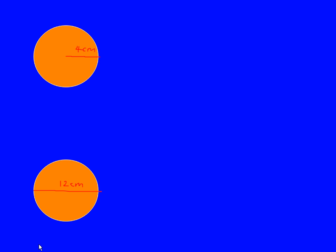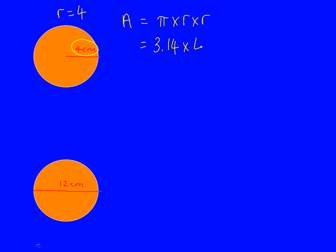Let's have a go at a question. For this first circle, what I always do is write down what r is next to the circle. The radius of this circle is 4, because 4 is the distance from the middle to the edge. If I wanted to work out the area of this circle, I would just do pi times r times r — that's 3.14 times the radius times the radius again. Type all of that into a calculator and you'll get the answer of 50.3.